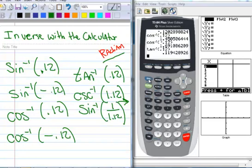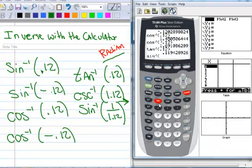So let's type that in. Second inverse sine 1 divided by 1.12. And there. Good.